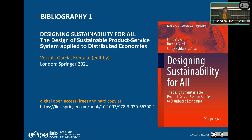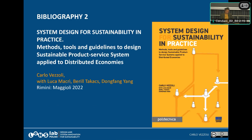The full title is: The Design of Sustainable Product Service Systems Applied to the Distributed Economy. This is the result of an EU research Erasmus+ project involving 36 universities from all around the world. The second book is called The System Design for Sustainability in Practice — it's more related to know-how: the tools, examples, guidelines, and that kind of material.